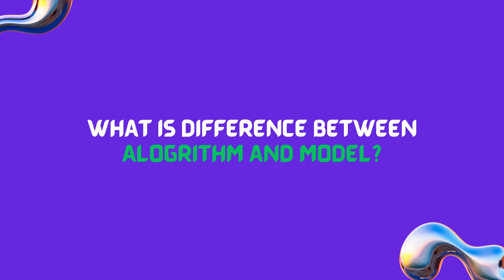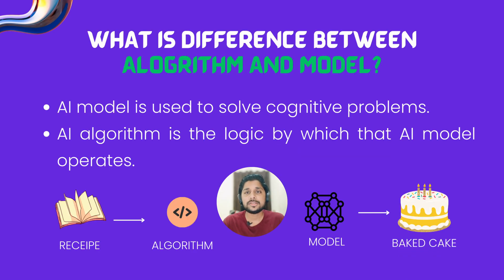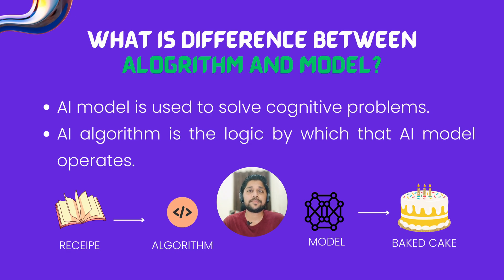A question often asked in interviews is to differentiate between an algorithm and a model. An AI algorithm is the set of instructions or rules that guides the AI system on how to perform a task. While a trained instance of the algorithm on a specific dataset — which can make decisions or predictions based on learned patterns to solve cognitive problems without further human intervention — is an AI model. Basically, the difference is similar to the difference between a recipe for a cake and an actual baked cake.